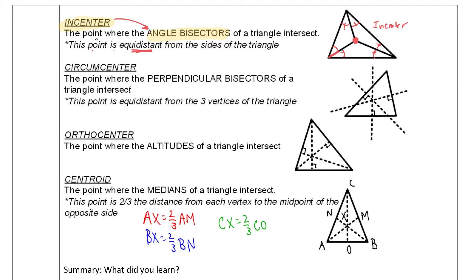And we know this point is equidistant from the sides. What do I mean by equidistant from the sides? That means the perpendicular distance to each side — that distance, that distance, and that distance — all three of those will be the same because it's equidistant from the sides.